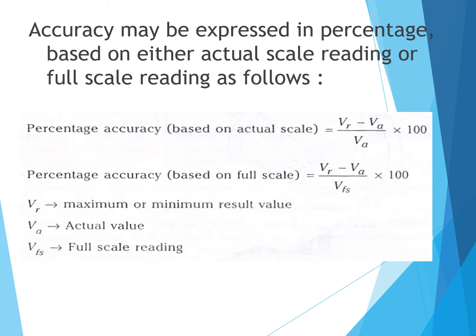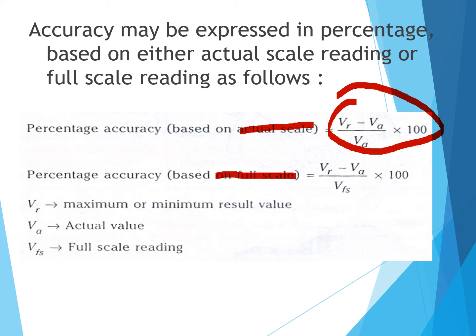Accuracy may be expressed as a percentage based on either actual scale readings or full scale readings. For actual scale: percentage accuracy = (VR − VA) / VA × 100, where VR is the maximum or minimum result value and VA is the actual value. For full scale: percentage accuracy = (VR − VA) / VFS × 100.